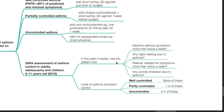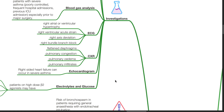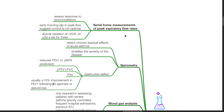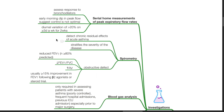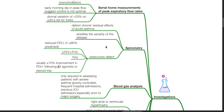In the past four weeks, has the patient had daytime asthma symptoms more than twice a week? Any night waking due to asthma? Reliever needed for symptoms more than twice a week? And any activity limitations due to asthma? Investigations: Serial home measurements of peak expiratory flow rates. Assess response to bronchodilators. Early morning dip in peak flow suggests control is not optimal. Diurnal variation of more than 20% on more than 3 days a week for 2 weeks is typical in bronchial asthma. Spirometry documents chronic residual effects of acute asthma and stratifies the severity of the disease, with an obstructive defect occurring as reduced FEV1, reduced FEV1 to FVC ratio, increased residual volume, and usually more than 15% improvement in FEV1 following beta-2 agonist or steroid trial.